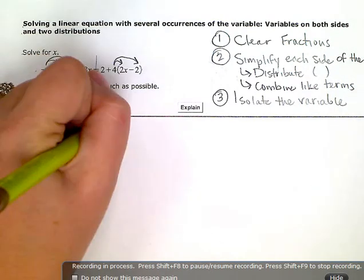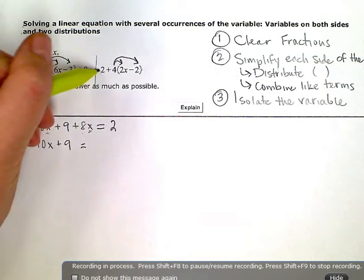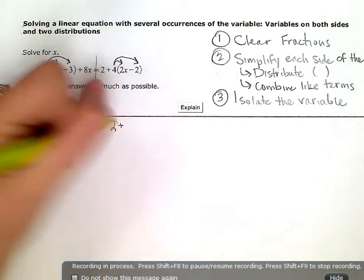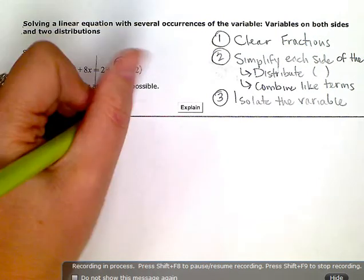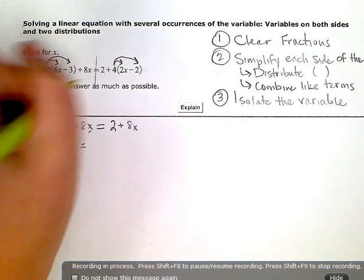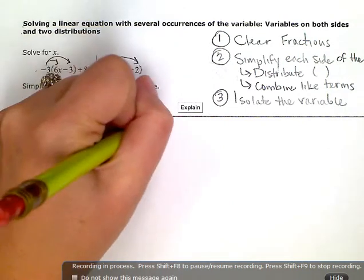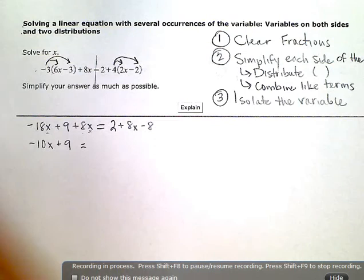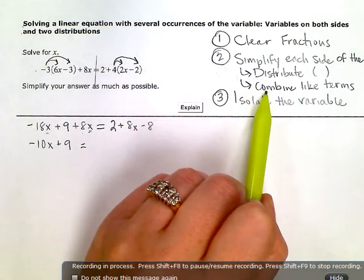I have a two plus, now four times 2x is 8x, and four times negative two is negative eight. So I distributed, now I'm going to combine like terms.